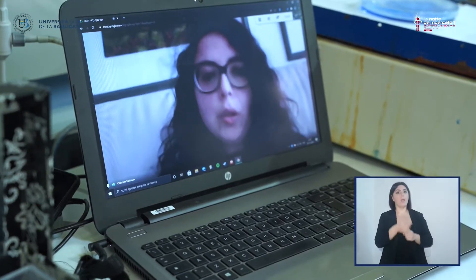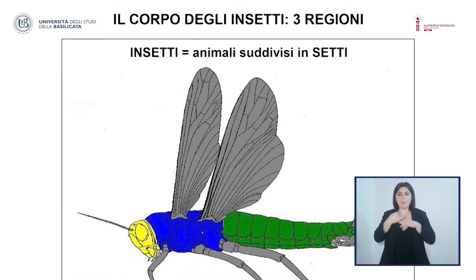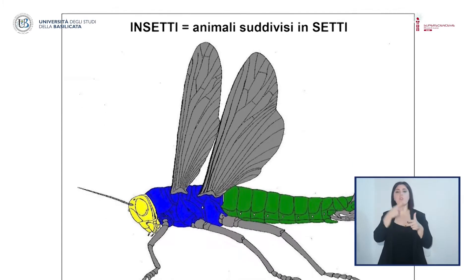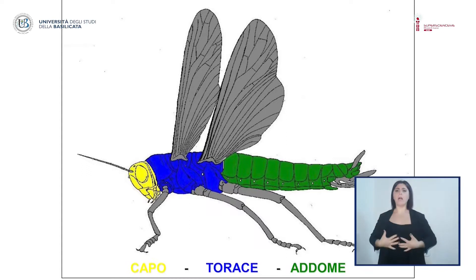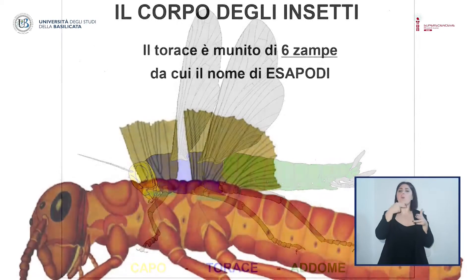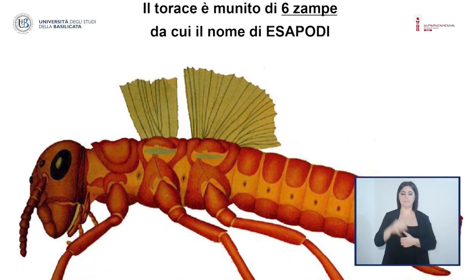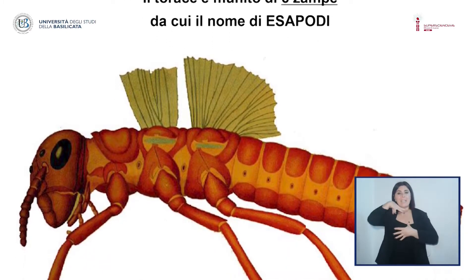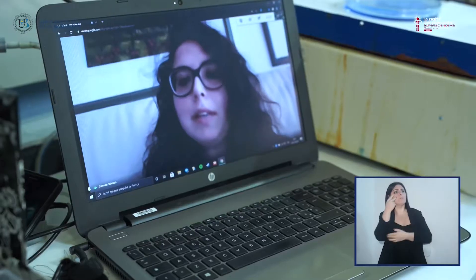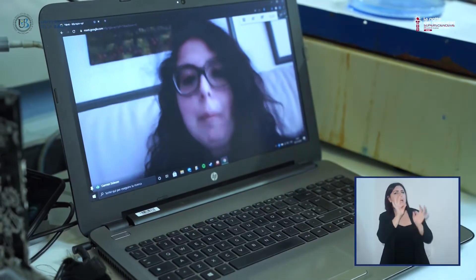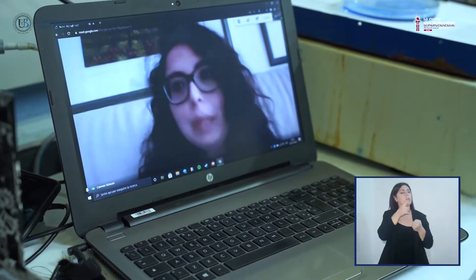Gli insetti si chiamano così perché il loro corpo è diviso in tre parti, che vengono definite setti, e sono il capo, il torace e l'addome. Gli insetti sono anche chiamati esapodi perché hanno all'interno del torace sei zampe. Quindi nel momento in cui trovate qualcosa che vi sembra un insetto, ma ha più o meno di sei zampe, non lo è assolutamente.